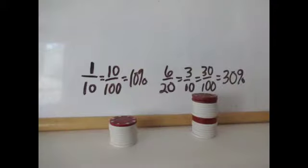Now let's work out the percentage of the right hand solution. The left hand one we know is 10 percent. The right one has six red chips out of 20. If we reduce that, we get three out of every 10. Multiplying both the numerator and the denominator by 10, we get 30 out of 100. Percent means per hundred, so 30 percent.